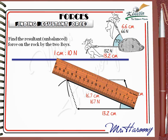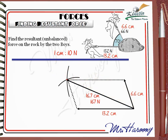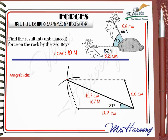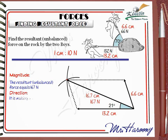Remember the scale is 1 cm to 10 N. Don't forget to find the direction of the resultant force by measuring its angle with the reference horizontal force. The protractor shows the angle is 21 degrees. So the resultant unbalanced force equals 167 N, making an angle of 21 degrees with the horizontal force to the northwest.